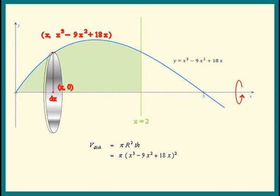And the thickness is dx. The total volume is the sum of all these disks. Where do we start these vertical slices? When x is zero and we keep moving until x is two. So those are the limits of integration.